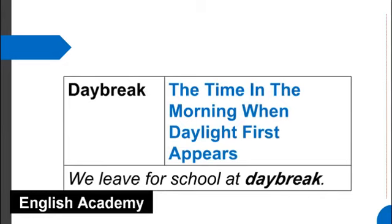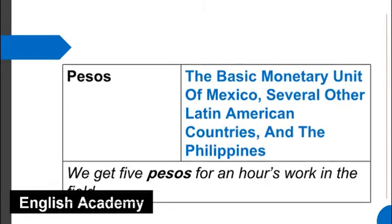Daybreak means the time in the morning when daylight first appears. Example sentence: We leave for school at daybreak. Pesos means the basic monetary unit of Mexico, several other Latin American countries, and the Philippines. Example sentence: We get 5 pesos for an hour's work in the field.